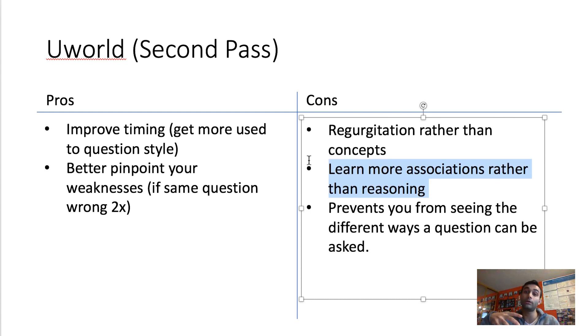As I mentioned, the second con is you'll learn more associations rather than reasoning. So you may see the same question twice, and maybe you'll get it wrong. Maybe you'll get it right the second time, but you'll be getting it right purely based on the association. You're like, I remember this question. And I remember I picked B, but I also remember why that wasn't the right answer and the answer was D.